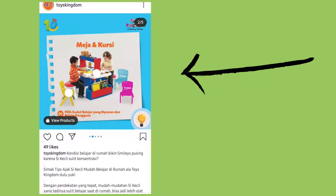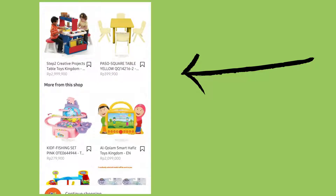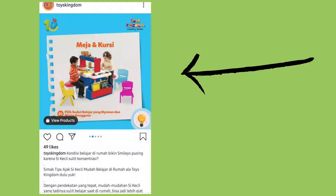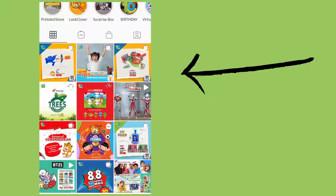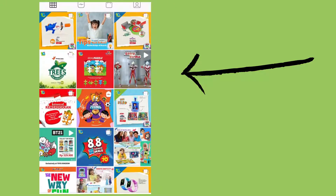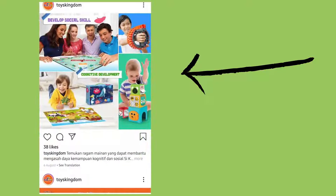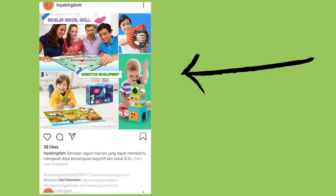They will tell you the product and the price, and they will make the photo interesting. They are giving tips and also promoting the products by telling the benefits, for example saying that the products will help to develop social skills and cognitive development.